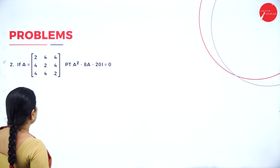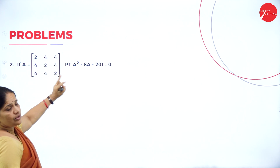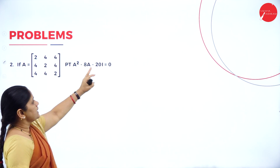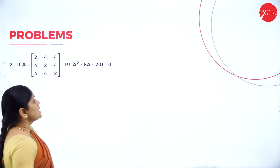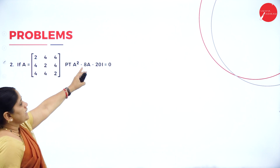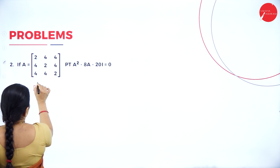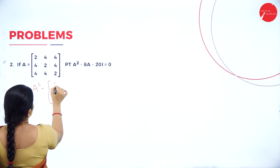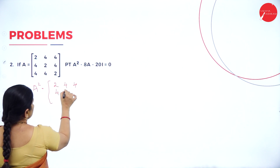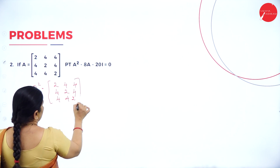Now the next problem: if A equals the matrix [2, 4, 4; 4, 2, 4; 4, 4, 2], prove that A squared minus 8A minus 20I equals 0. So we have to find A squared, we have to find 8A, and we have to find 20I. So I write A squared equals [2, 4, 4; 4, 2, 4; 4, 4, 2] multiplied by [2, 4, 4; 4, 2, 4; 4, 4, 2].